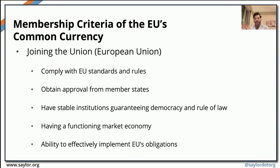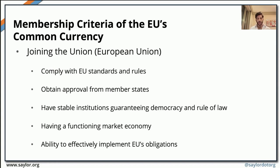The EU or European Union is basically the political union that binds member states in the European continent together. To be a member of this union, a country needs to comply with the standards and rules imposed by the EU and obtain approval from all member states. They also have to have stable institutions that apply democracy and ensure that the rule of law is properly respected, and they need to have a functioning market economy.